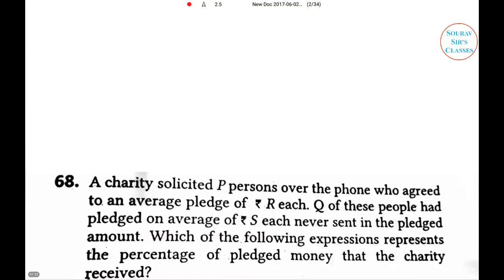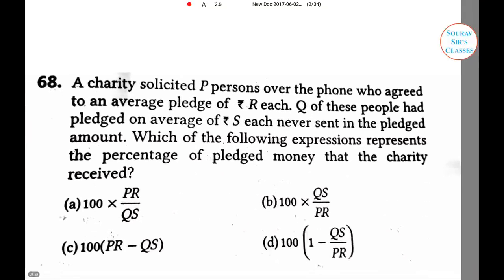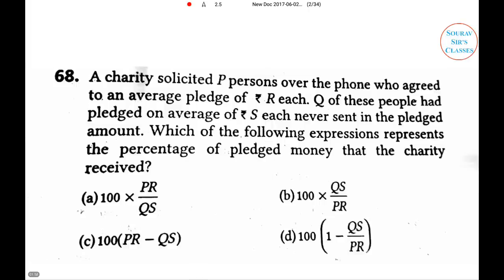This question is relatively challenging because there are fewer digits and more alphabets. A charity solicited p persons over the phone who agreed to an average pledge of r. So the total pledge is simply p×r. Q of these people had pledged an average of s each but never sent in the pledged amount. Which expression represents the percentage of pledged money that the charity actually received?